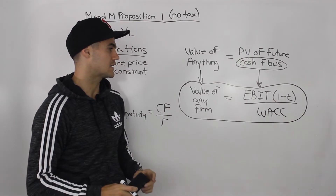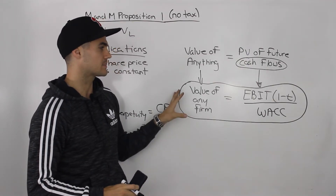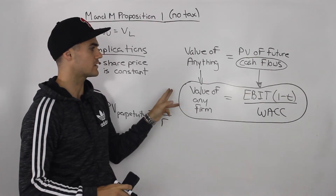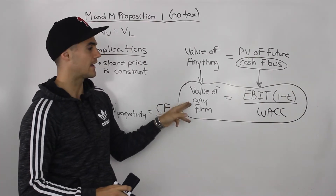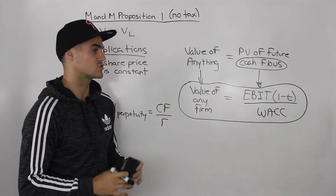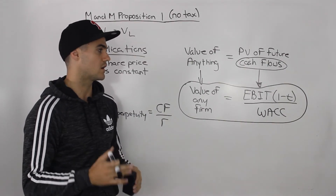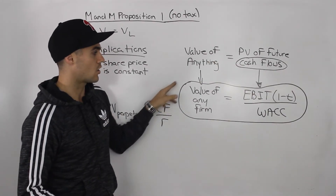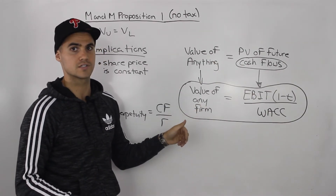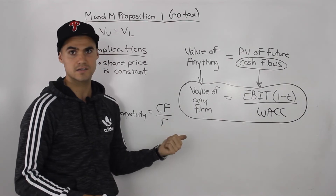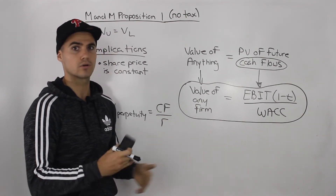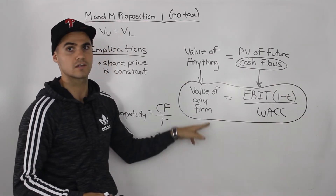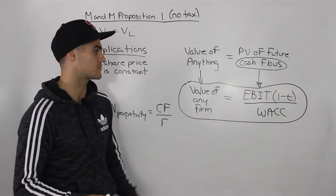This formula a lot of times isn't even mentioned when this chapter is taught. I don't think even your textbook explicitly mentions it, but it is super useful. It's going to make our lives a lot easier when doing questions or checking questions. It's always going to hold whether you're dealing with no taxes like in this case, or even when dealing with taxes. You can think of this as your secret weapon in this chapter.